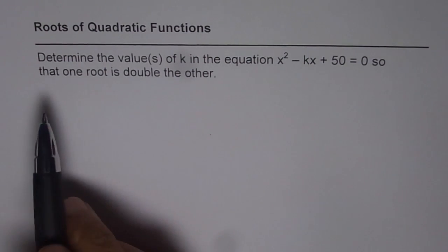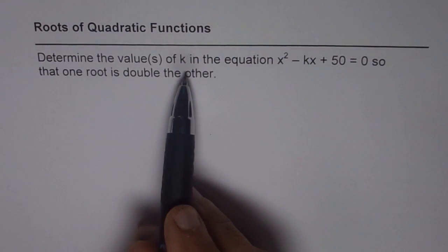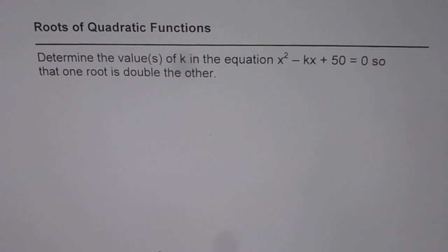Here the question is, determine the values of k in the equation x² - kx + 50 = 0 so that one root is double the other.